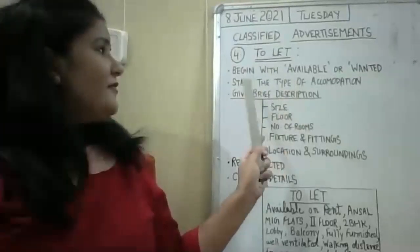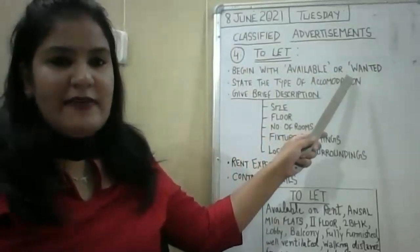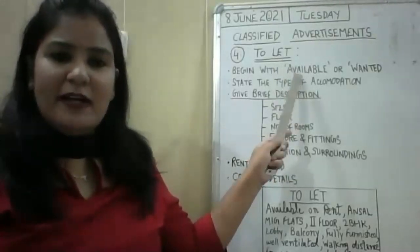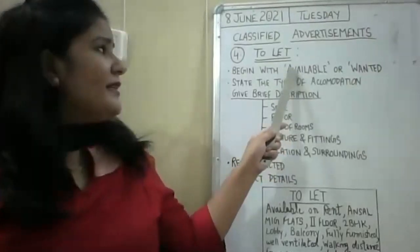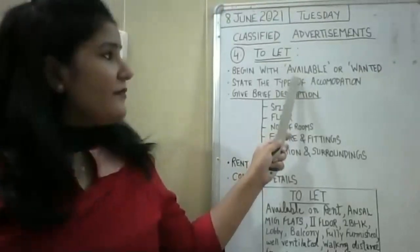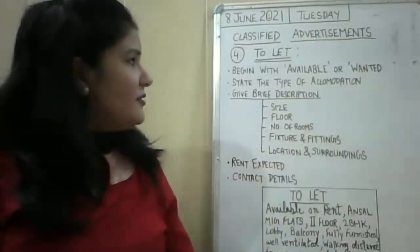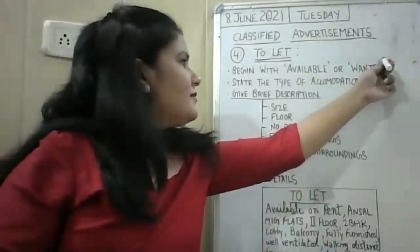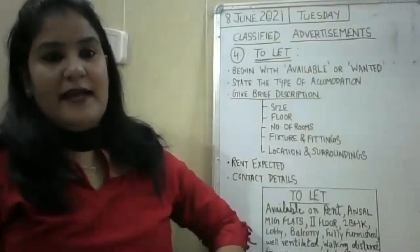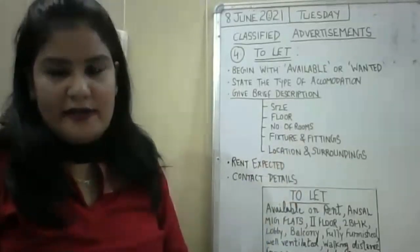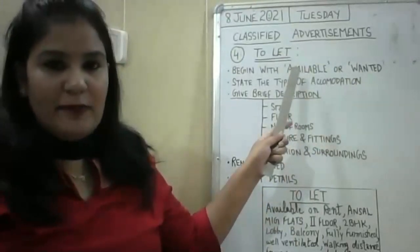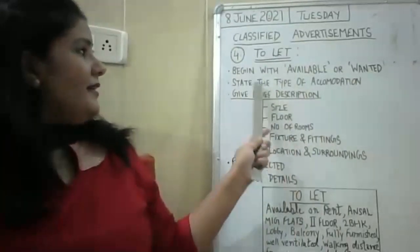To Let means to give on lease or to give on rent. First value point: begin with 'Available' or 'Wanted.' Suppose you have a flat, a shop, or any commercial property which you want to give on lease — the first keyword would be 'Available' because you are going to give it to others on lease and it is available. On the other hand, if you want a property on lease, the first keyword would be 'Required' or 'Wanted.' If you want to get a property, write 'Wanted' or 'Required'; if you have the property, write 'Available' first.